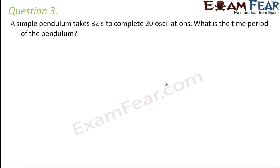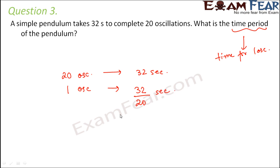Question number three. A simple pendulum takes 32 seconds to complete 20 oscillations. What is the time period of the pendulum? So what is time period? As I said, it is the time taken for one oscillation. So here in the question, we see that for 20 oscillations, it takes 32 seconds. Therefore, for one oscillation, it would take 32 by 20 seconds, which would come out to be 1.6 seconds. So therefore, 1.6 seconds is the time period of the pendulum.